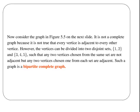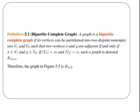Each element of Group A is connected with every element in Group B, and so on. Formally, a graph is a Bipartite Complete Graph if its vertices can be partitioned into two disjoint, non-empty sets V1 and V2, such that two vertices X and Y are adjacent if and only if X is an element of V1 and Y is an element of V2. If the cardinality of V1 is M and the cardinality of V2 is N, we denote it as K(M,N).